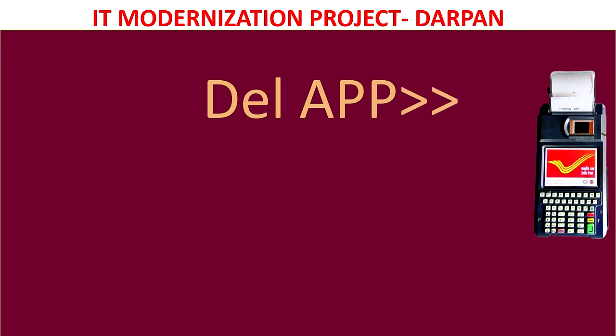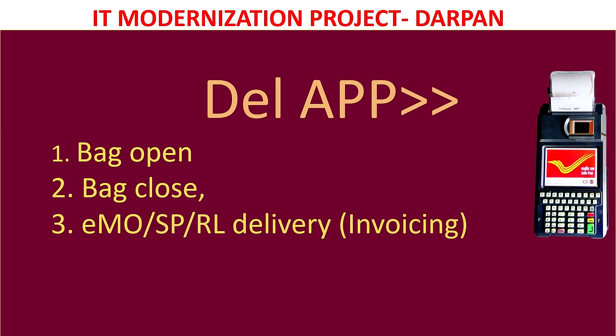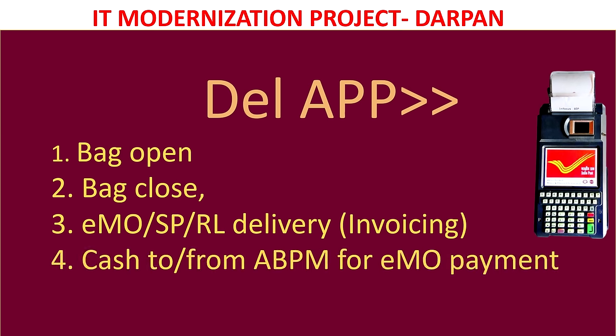Coming to the delivery app, the following provisions are available: bag opening and bag close can be done in the delivery app. EMO, speed post, and RL delivery as well as invoicing can be done in the delivery app. All delivery-related items can be done through the delivery app. Cash to and from the branch ABPM for EMO payments can also be handled in the delivery app. Window delivery can also be attempted through the delivery app only.